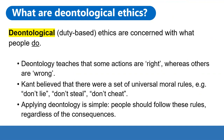Deontological or duty-based ethics are concerned with what people do. Deontology teaches that some actions are inherently right, whereas others are inherently wrong. The philosopher Immanuel Kant believed that there were a set of universal moral rules. For example, don't lie, don't steal and don't cheat.